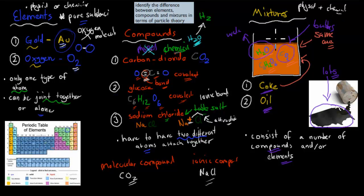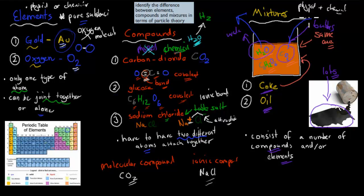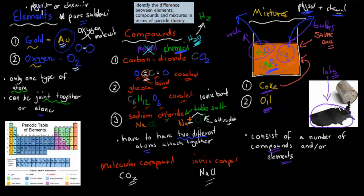With mixtures, we can both physically and chemically separate them. For example, when it comes to Coke, if we were to heat it, water would evaporate, the carbon dioxide would escape as gas, and we might be left with some glucose. So we can separate the components of a mixture by physical means like heating, and also by chemical means. Whereas compounds can only be separated by chemical means, and elements can't be separated by either chemical or physical means — because they're the smallest unit.